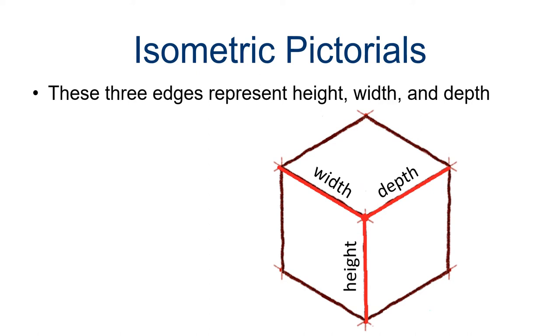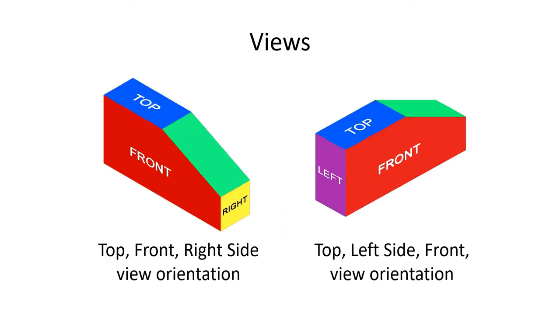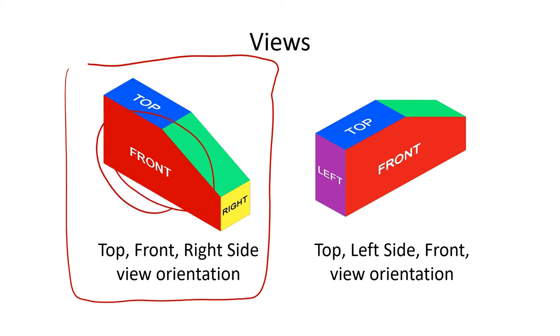So these three edges represent the height, width, and depth, as you can see. And for views, we're going to use this view convention in this class. The front is like on the bottom left-hand side. The right side is on the bottom right-hand side. And the top is on the top. Don't turn the object. We want to see the right face. Front, top, right side view.